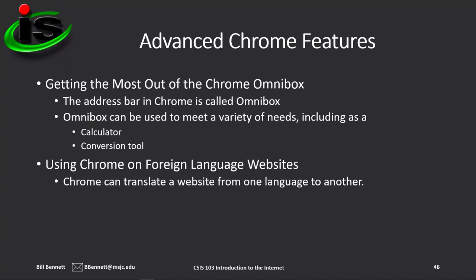In Google Chrome, the address bar is called an Omnibox — 'Omni' standing for all-encompassing. The Omnibox can be used for a variety of needs, including as a calculator and a conversion tool. You can go into the Chrome address bar, type in '2 + 2,' press enter, and it'll give you the result — or any mathematical calculation for that matter. It also does conversions, such as Fahrenheit to Celsius or meters to yards, and vice versa. You can also use Chrome on foreign language websites — if a page is written in a foreign language, Chrome can translate it into your native language.